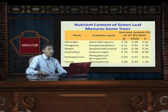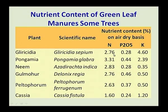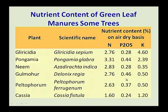If we look at the nutrient content of different green leaf manures: Gliricidia has 2.76 percent nitrogen, 0.28 percent phosphorus, and 4.6 percent potassium. Pongamia leaf has 3.3 percent nitrogen, 0.4 percent P2O5, and 2.3 percent potassium. Neem leaf has 2.8 percent nitrogen, 0.2 percent P2O5, and 0.3 percent potassium. Gulmohar leaf has 2.7 percent nitrogen, 0.4 percent phosphorus, and 0.5 percent potassium. Peltophorum leaves have 2.6 percent nitrogen, 0.3 percent P2O5, and 0.5 percent potassium. KCR leaves have 1.6 percent nitrogen, 0.2 percent phosphorus, and 1.2 percent potassium.